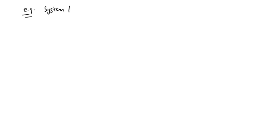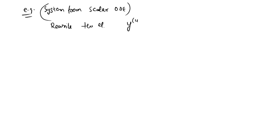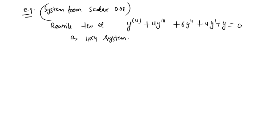Another example shows you can construct a system from a scalar differential equation — scalar means you have only one equation. For instance, rewrite the equation y'''' + 4y''' + 6y'' + 4y' + y = 0 as a 4 by 4 system. This is a fourth-order differential equation that we need to write as a system.